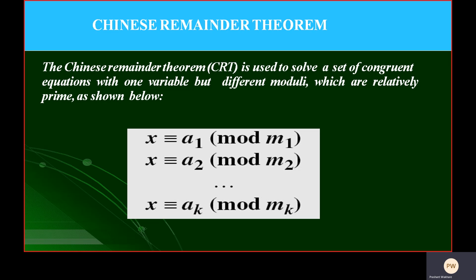The Chinese Remainder Theorem is used to solve a set of congruent equations. Congruent equations means that GCD will be 1. Any numbers of GCD will be 1, and only one variable but different moduli, which are relatively prime.